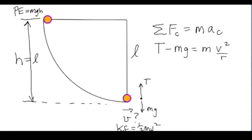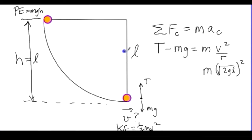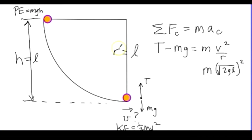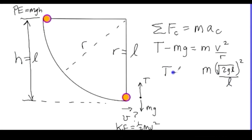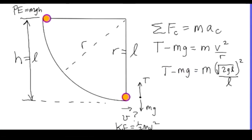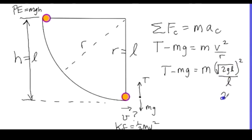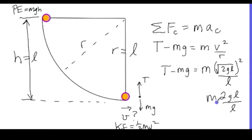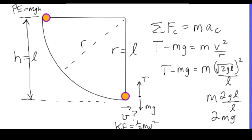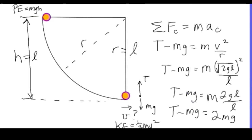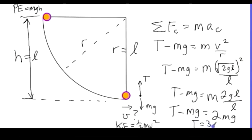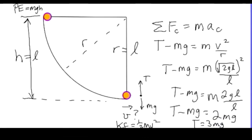Going back to the equation, the velocity is √(2gl) and the radius r equals the pendulum length l. Substituting: T − mg = m(2gl)/l = 2mg. Therefore, T = 3mg — the tension in the string at the bottom of the swing is three times the weight of the object.